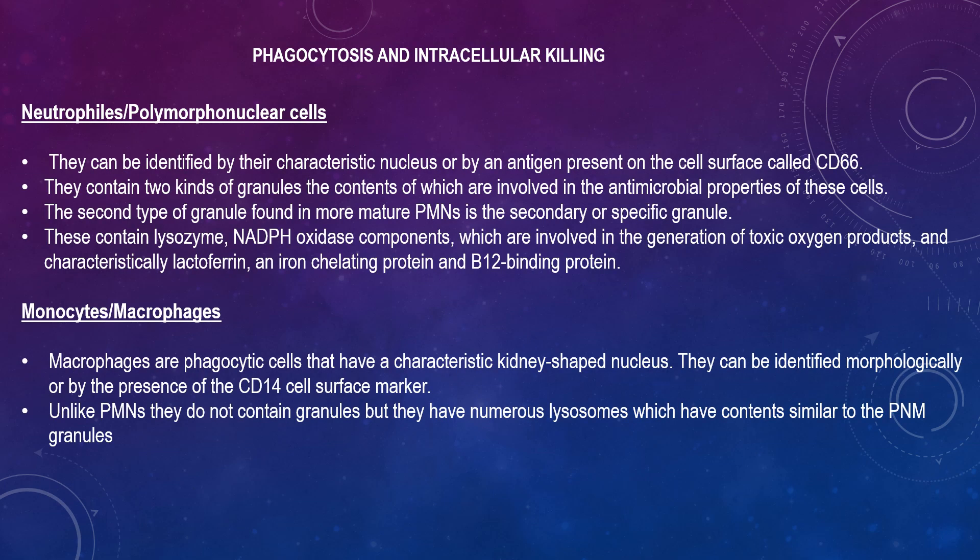Neutrophils, or polymorphonuclear cells, are phagocytic cells characterised by an antigen present on the cell surface called CD66. They contain two types of granules involved in the antimicrobial process. The primary or azurophilic granules, abundant in newly formed PMNs, contain cationic proteins and defensins that can kill bacteria, proteolytic enzymes like elastase and cathepsin G to break down proteins, lysozyme to break down bacterial cell walls, and myeloperoxidase involved in the generation of bactericidal components. The secondary or specific granules, found in more mature PMNs, contain lysozyme, NADPH oxidase components involved in the generation of toxic oxygen products, and characteristically lactoferrin and iron chelating protein B12 binding protein.